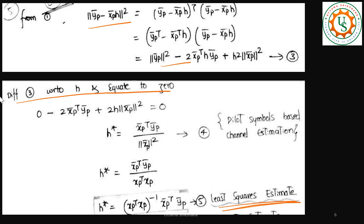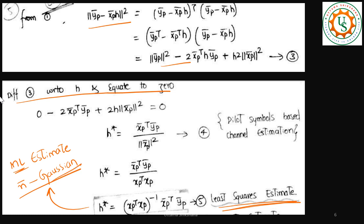This is how you get the least square solution. This can also be referred to as the maximum likelihood (ML) estimate, because to say ML we need to consider the noise as Gaussian. Once it is Gaussian, we take the log-likelihood function based on the Gaussian distribution, and if we maximize the log-likelihood, the solution also arrives as the same as the least square estimate. So the least square solution applies when noise has no defined distribution; when noise is Gaussian, the same solution is the ML estimate.